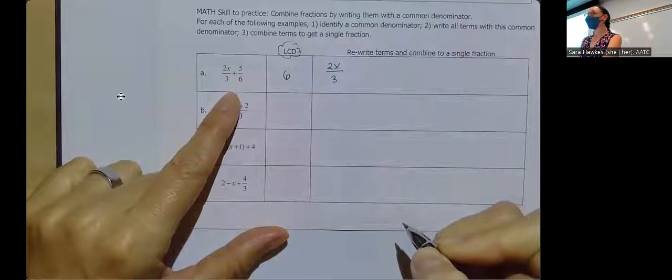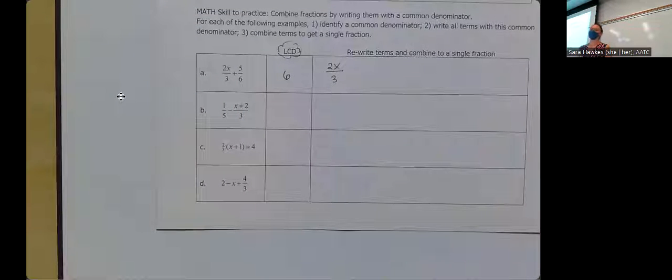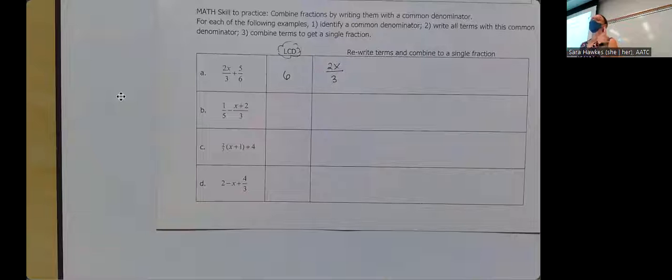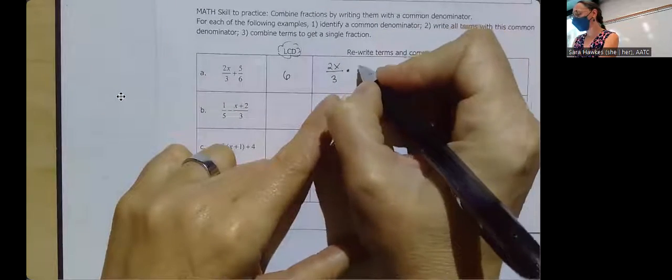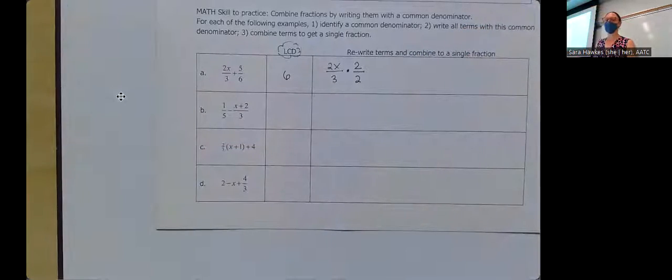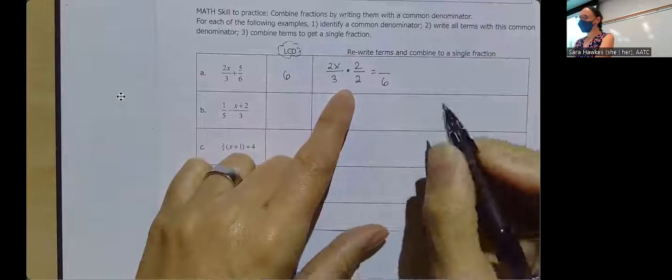If I'm going to rewrite the terms to both have a common denominator of six, it's that 2x over three that I've got to deal with. One of those rules is that one is our multiplicative identity, meaning if I multiply a number by one, it doesn't change the value of the number. So when I'm looking at that 2x over three, if I need it to have a common denominator of six, I'm going to multiply this by two over two — because secretly, two over two is equal to one. So this piece of it is going to leave me with a six on the bottom.